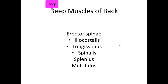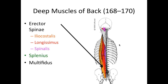Now we have the deep muscles of the back. We have erector spinae, which is made up of three separate muscles: iliocostalis, longissimus, and spinalis. Two other deep muscles are splenius and multifidus. Iliocostalis is named so because it originates from the ilium and inserts onto the costals — the ribs.